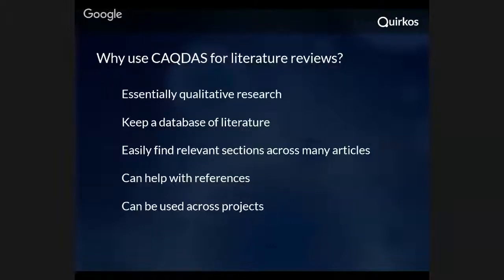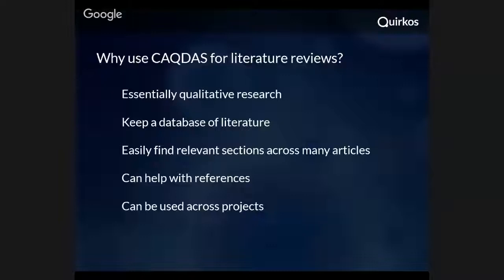Most of the time researchers will work on fairly similar topics, and a lot of the literature they'll work on between one paper and another within a project is very similar. And even across projects — for example, if you're working in a particular area of participatory research, you're likely to use the same references over and over again. So by investing the time to start up a database of your literature, you can save yourself time across all projects and stop reinventing the wheel every time you want to find a particular quote or article.